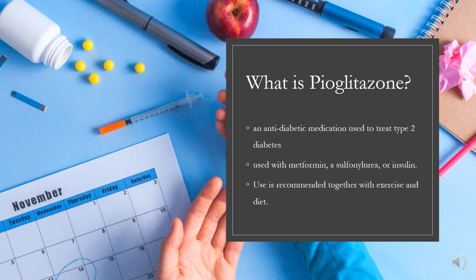Pyoglitazone, sold under the brand name Actos among others, is an antidiabetic medication used to treat type 2 diabetes. It may be used with metformin, a sulfonylurea, or insulin. Use is recommended together with exercise and diet. It is not recommended in type 1 diabetes. It is taken by mouth.